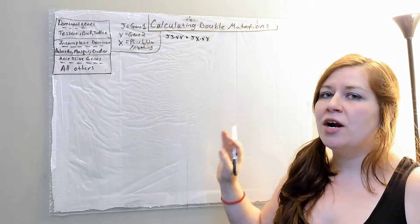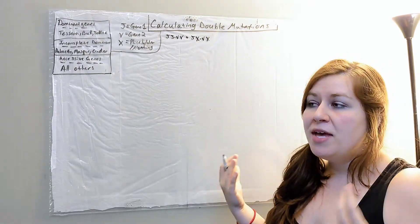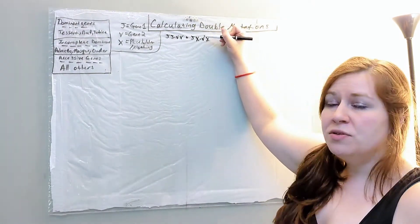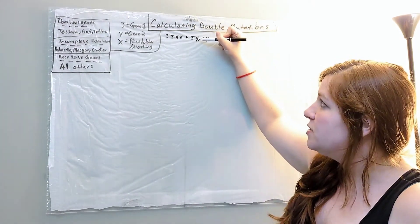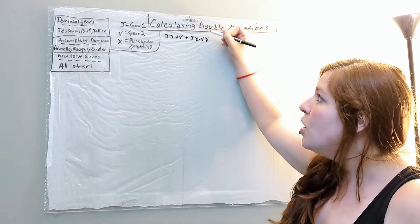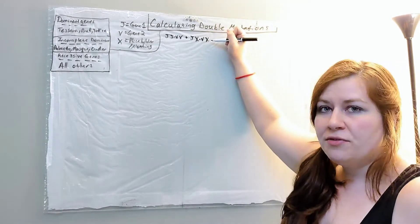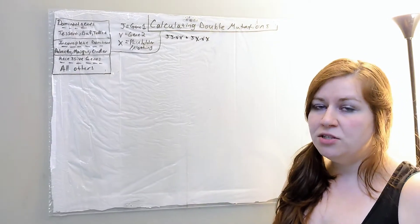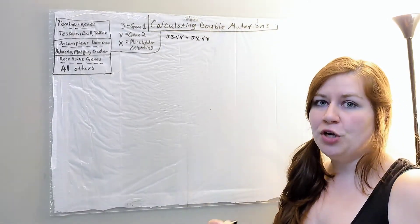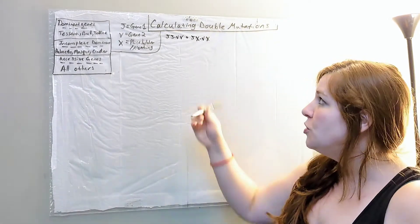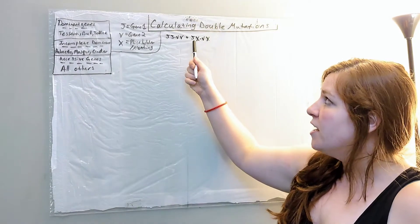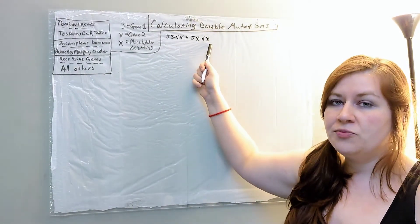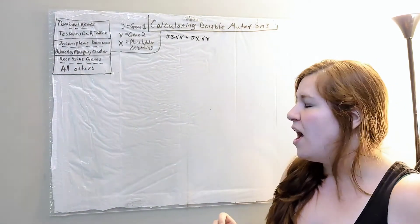This is where a lot of people might find it easier to use a small letter instead of X - so a small letter J instead of an X, or a small letter V instead of an X. I always use X because that's easier for me, but if it's easier for you to substitute a small letter in place of the X, feel free to do that.